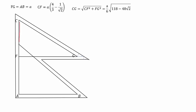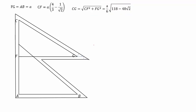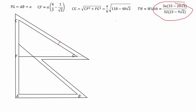Using triangle CFZ as a right angle triangle, we can apply the Pythagorean theorem to find CG, which equals the square root of CF squared plus FZ squared. This gives us the result for the length CG.